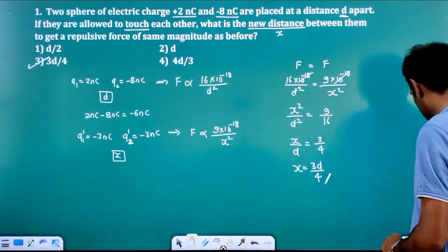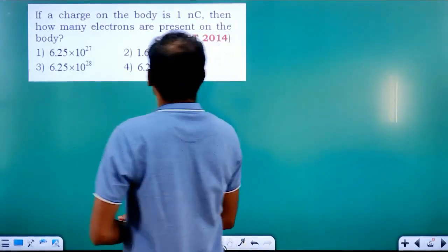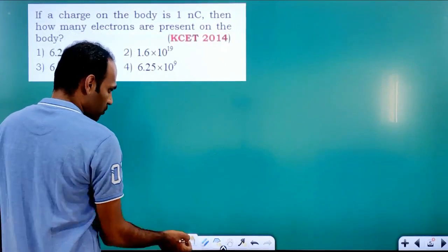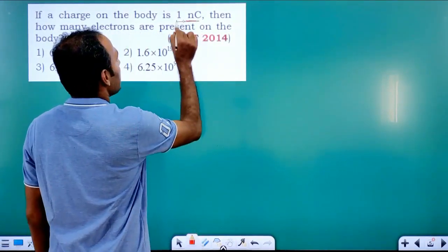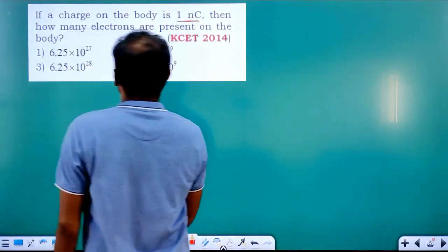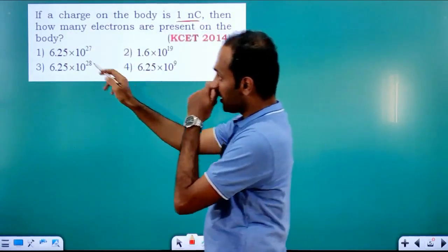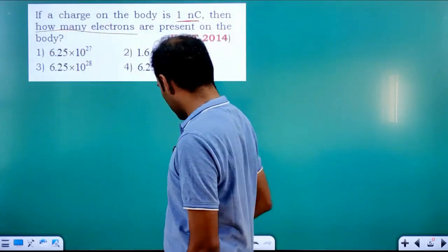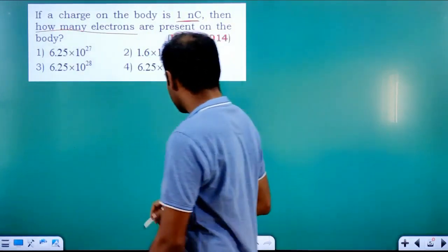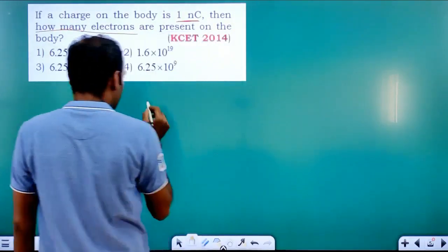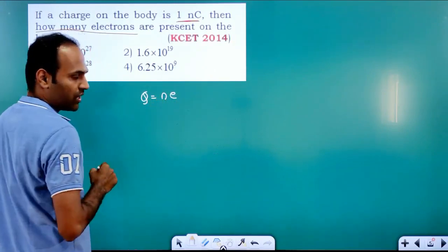We will go to the next question. If the charge on a body is 1 nanocoulomb, then how many electrons are present on the body? We have to find the number of electrons. For this, quantization is to be used — q is equal to n into e.